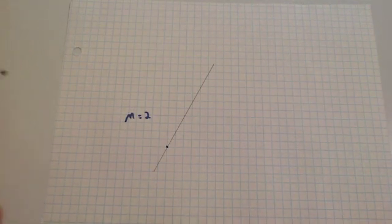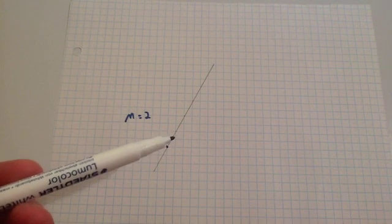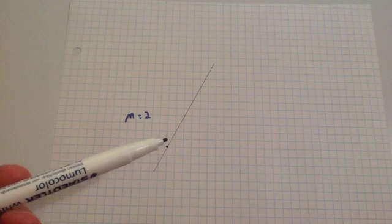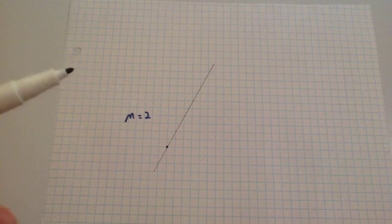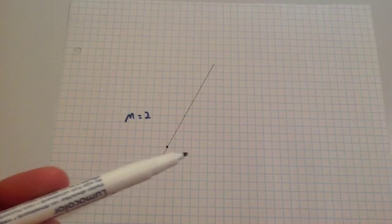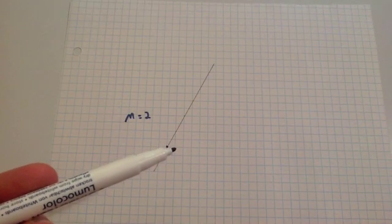Two bits of advice: first, whenever it doesn't go across 1 and through an actual coordinate — for instance, the previous example where it was a half — it's actually better to use rise over run then. Also, make sure on your graph that the numbers along the x-axis go up by 1, so you're going across by 1.